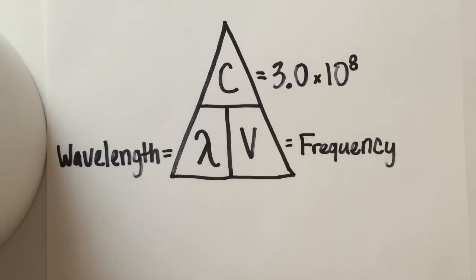V is your frequency, which is represented in hertz, or seconds to the minus 1. Lambda is your wavelength, and it can either be in meters or nanometers. It is usually in nanometers, though.